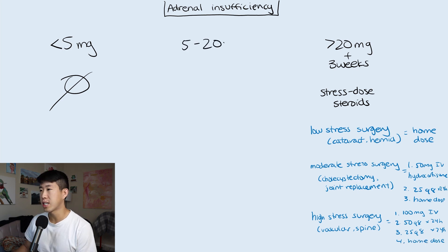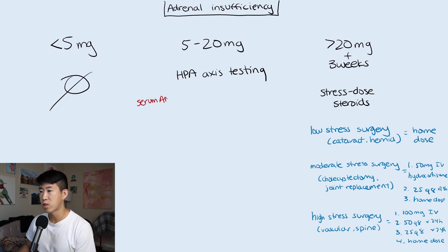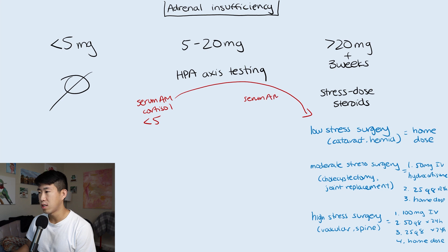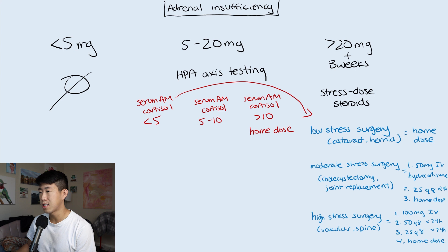For patients taking between 5 and 20 milligrams of prednisone daily — the middle ground — we need to do stress testing, basically testing their HPA axis. Start with a serum AM cortisol. If less than 5, they are adrenally suppressed and you proceed directly to stress dose steroids. If greater than 10, they are not adrenally suppressed and can just continue their home dose. If between 5 and 10, the test is indeterminate and you do further testing with ACTH stimulation testing, also known as cosyntropin stimulation test.